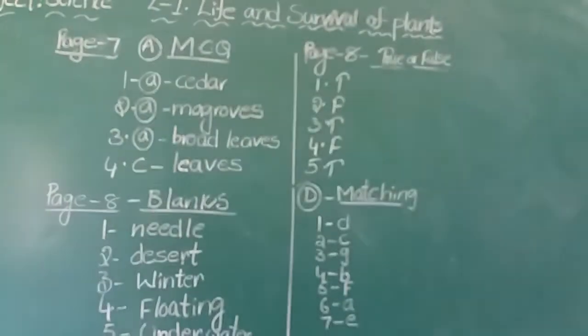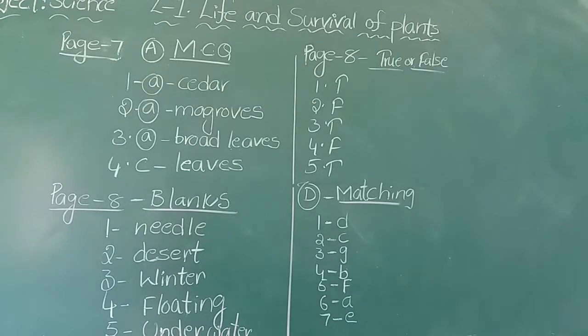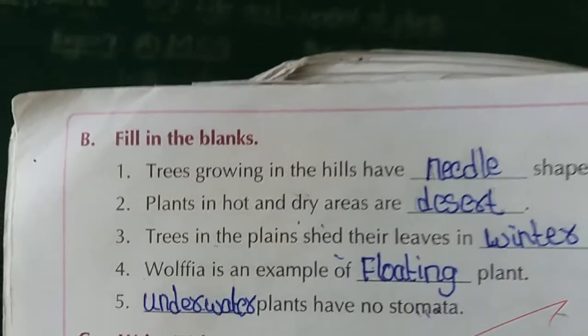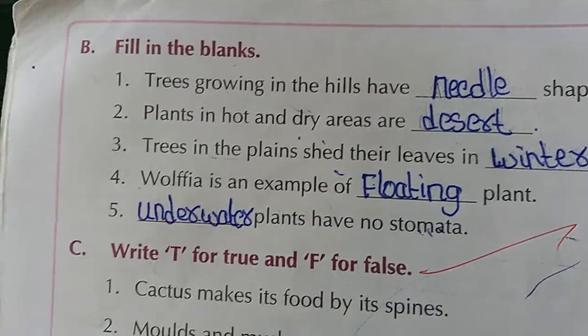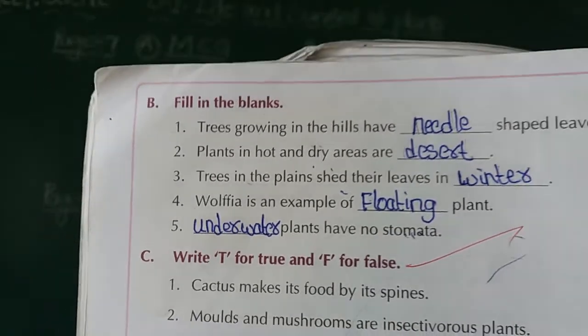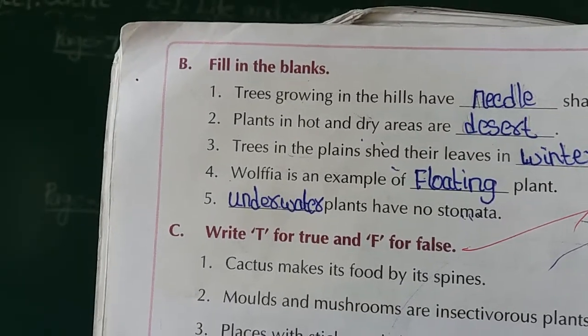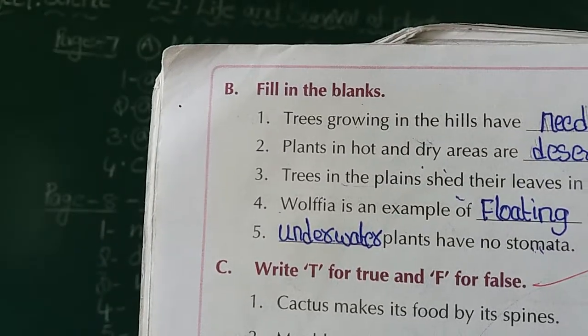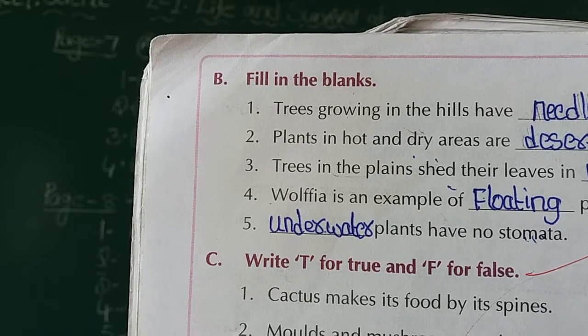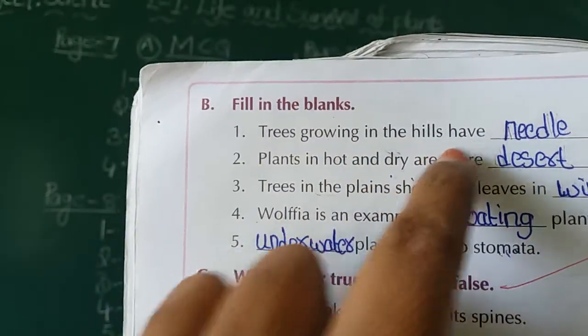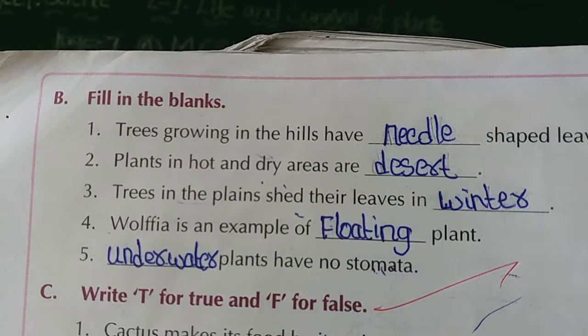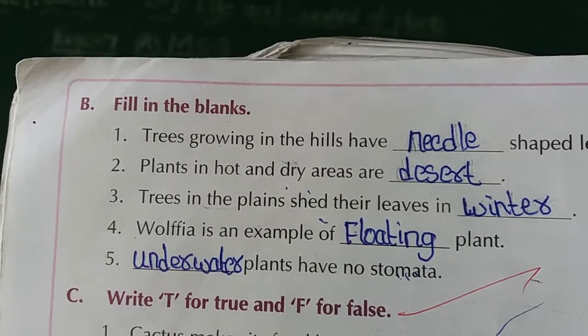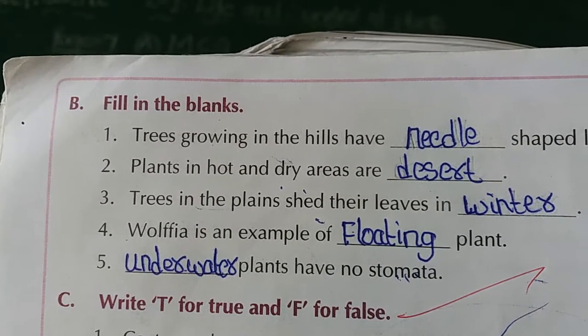Open next page - page number 8. Now see here, blanks are there. Fill in the blanks, page number 8, Roman B. Read the first question: trees growing in the hills have a dash-shape leaves. What type of leaves do they have? Needle-like leaves.